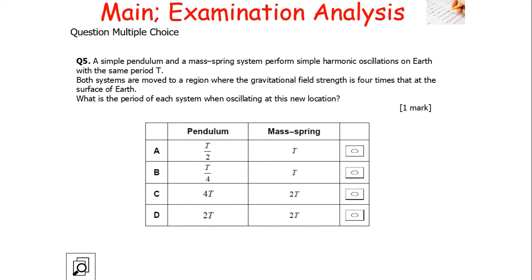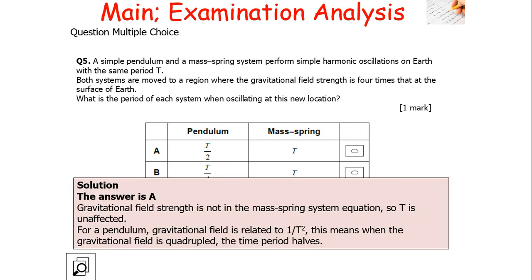Question 5: a simple pendulum and a mass-spring system perform simple harmonic motion on Earth with the same period T. Both are moved to a region where the gravitational field strength is four times that at the Earth's surface. For the mass-spring system, the only factors affecting the time period are m and k, so the period remains T. For the pendulum, gravitational field strength is related to time period by 1/T², so when gravity is quadrupled, the time period halves. The answer is A.